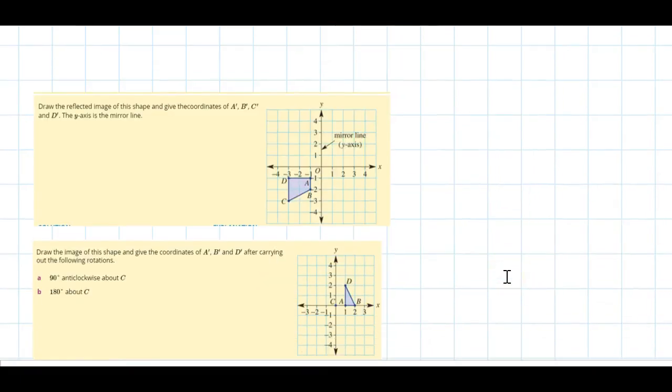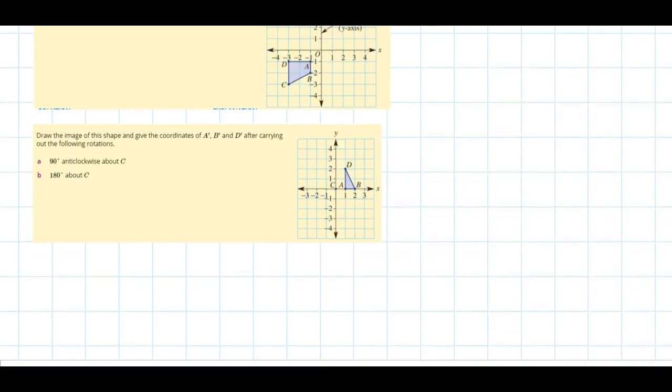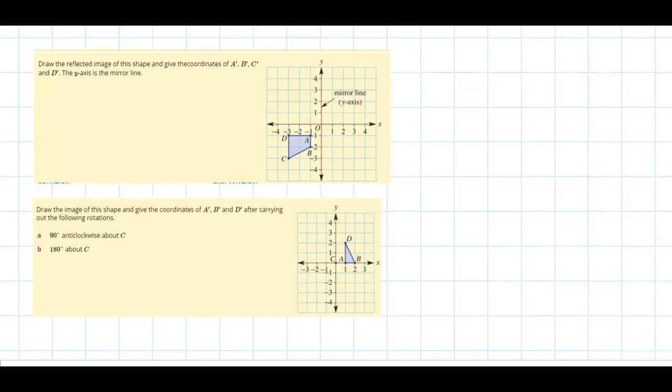Let's have a practice now. We'll show you what some examples are and basically some of the questions you might receive in this unit. Make sure you look at how we do these so you get an idea of how to answer the questions. Firstly draw the reflected image of this shape and give the coordinates of A, B, C and D. The y-axis is the mirror line.